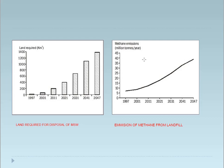What are the methane emissions in million tons per year, from 1997 and estimated up to 2047? Right now we are at about 15 million tons per year and we will go up to 40 million tons per year. This is the emission of methane from landfill, and methane is a greenhouse gas which will contribute to global warming and cause so many problems.